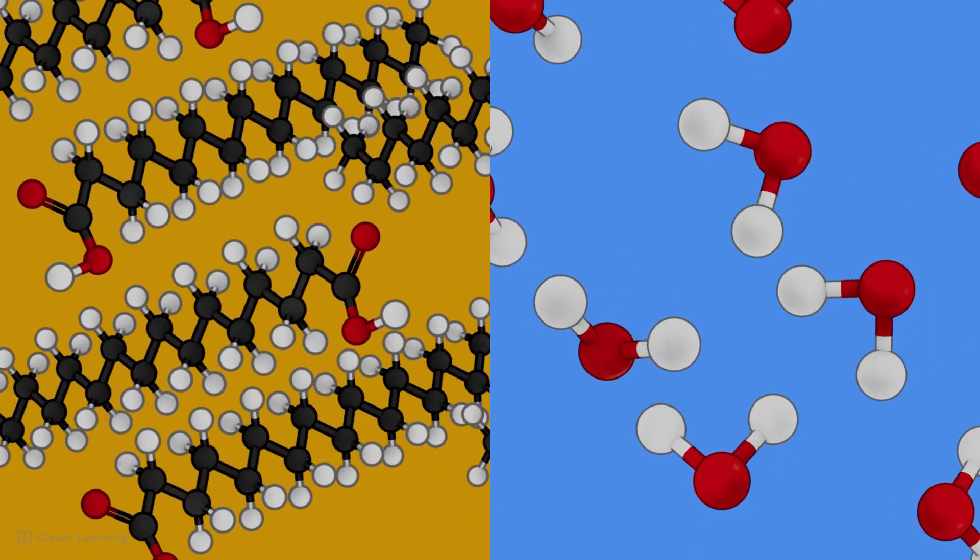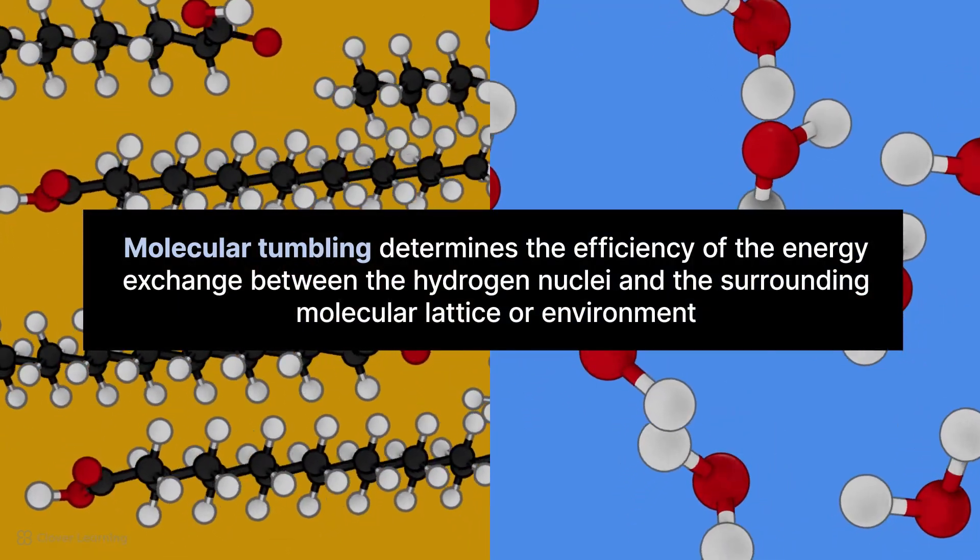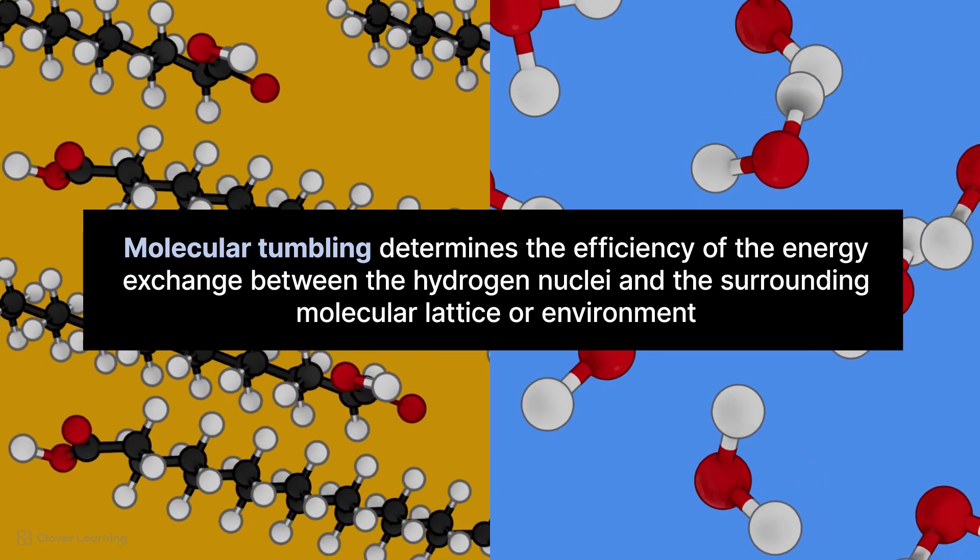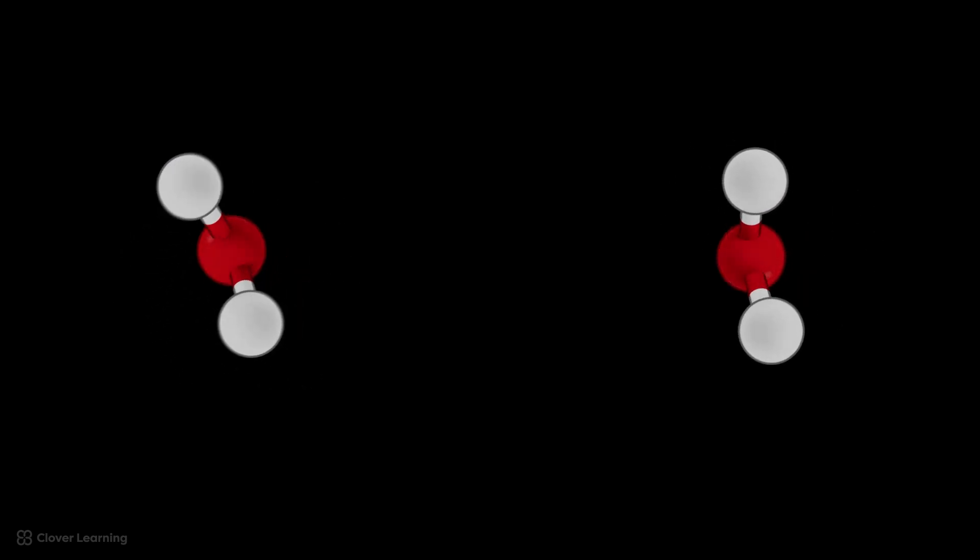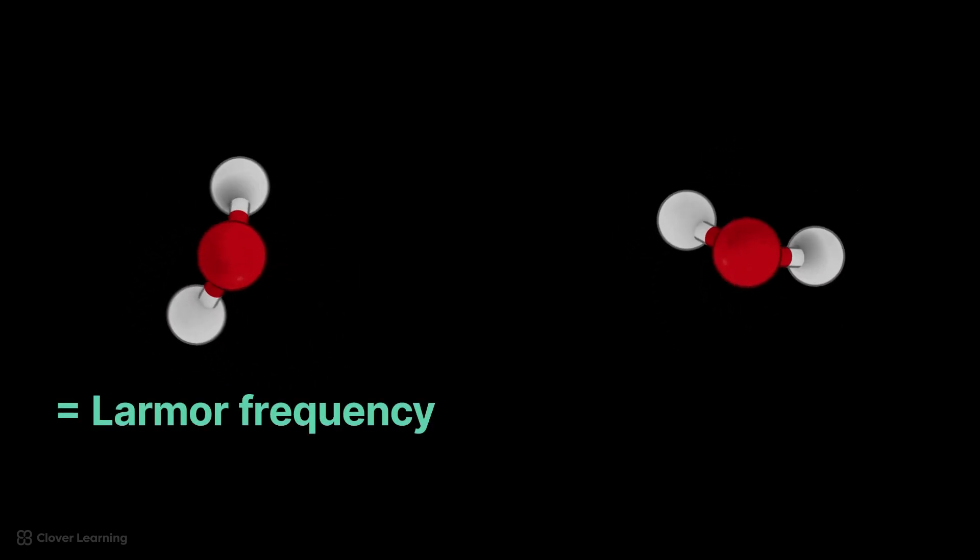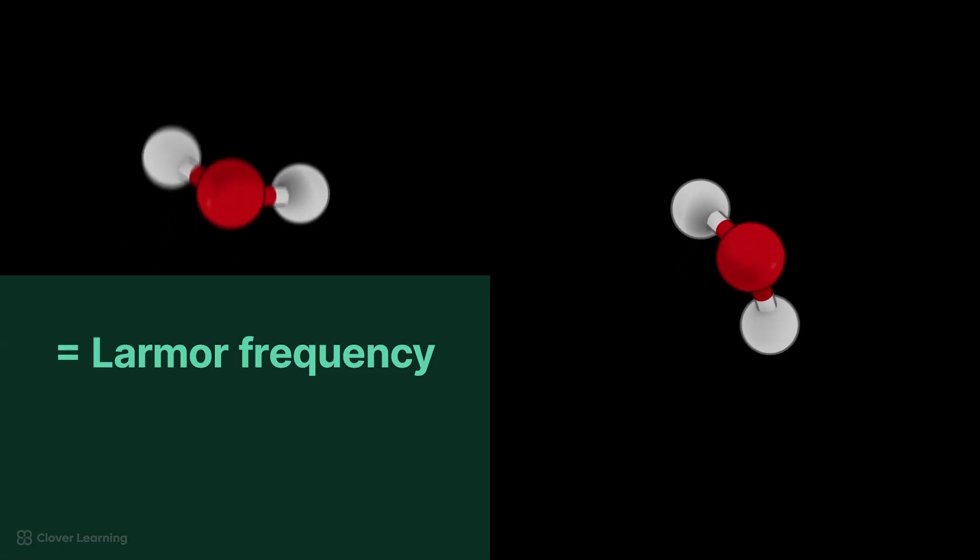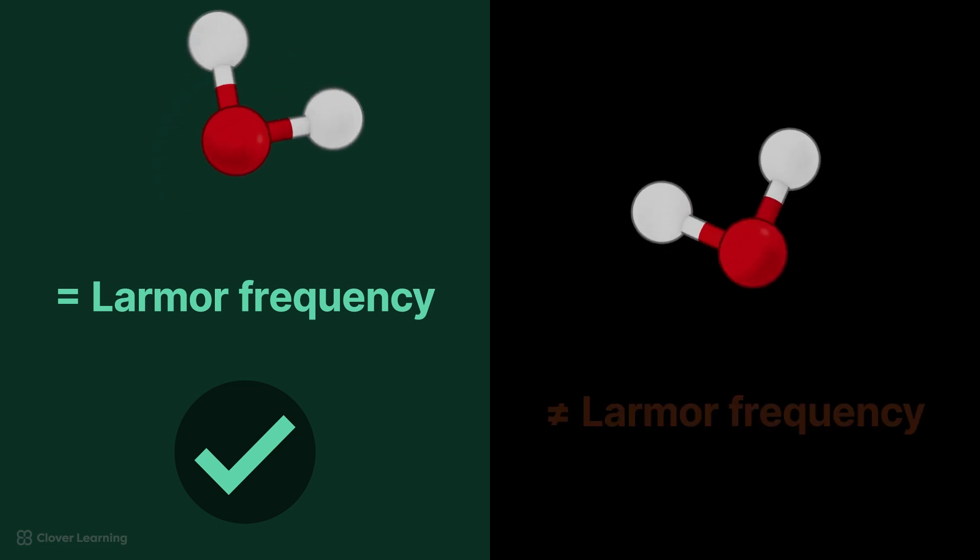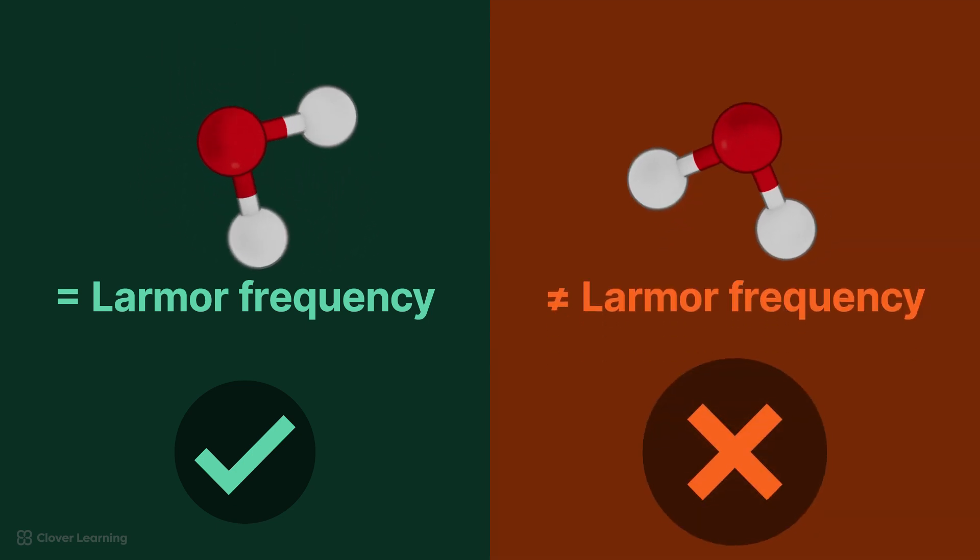Molecular tumbling rate is how quickly molecules rotate or tumble. Molecular tumbling determines the efficiency of the energy exchange between the hydrogen nuclei and the surrounding molecular lattice or environment. If the surrounding molecules in the lattice have a tumbling rate that matches the Larmor frequency of the hydrogen nuclei, then the energy exchange is efficient. If the surrounding molecules in the lattice have a tumbling rate that does not match the Larmor frequency, then the energy exchange is not as efficient.